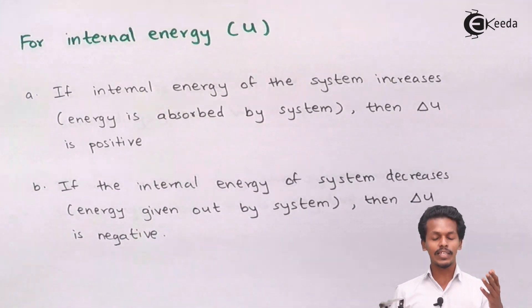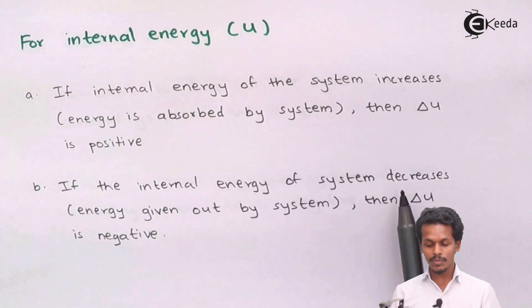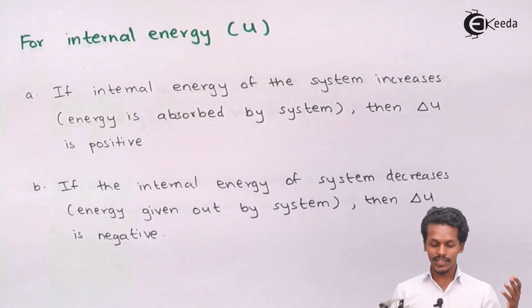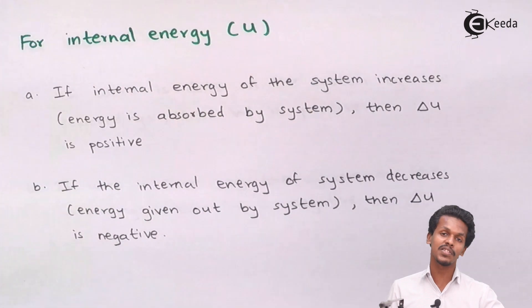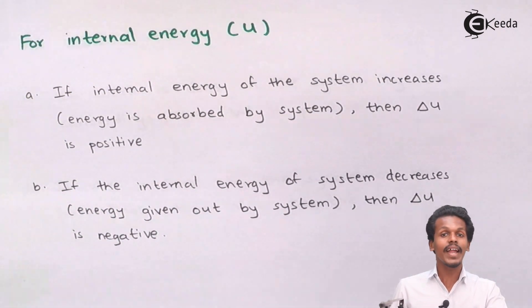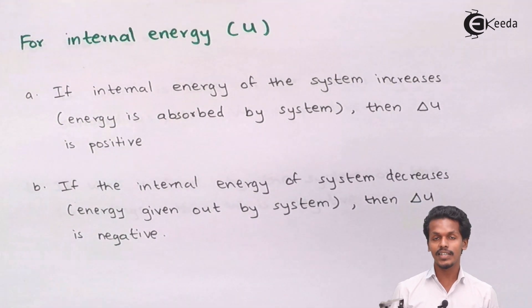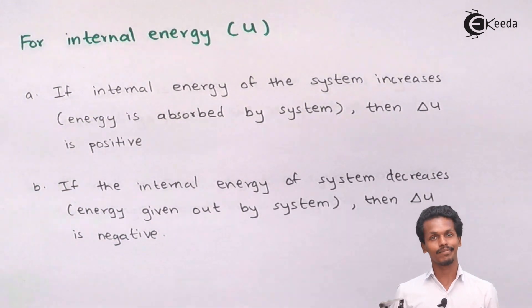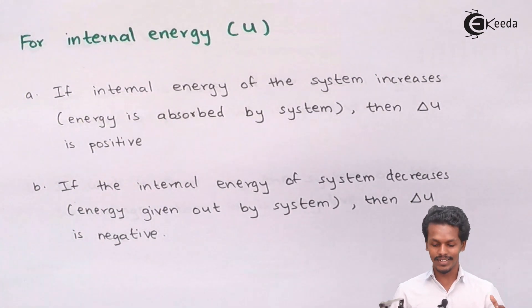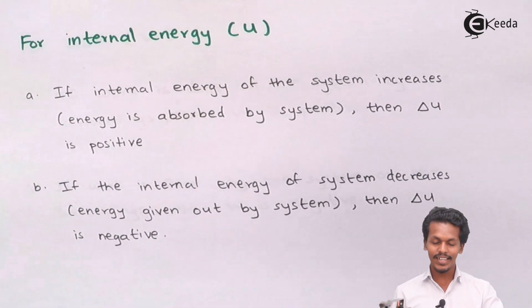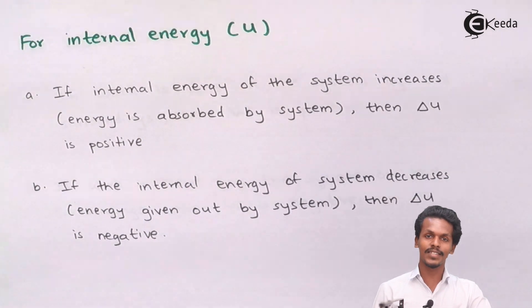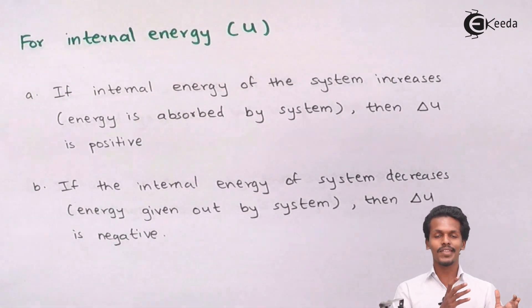If the internal energy of a system decreases, this happens when energy has been given out or removed from the system to the surrounding. The system no longer has the energy it had initially, so the internal energy decreases and the change in internal energy delta U is negative. This is how we differentiate which kind of process has occurred depending on the interaction between system and surrounding.